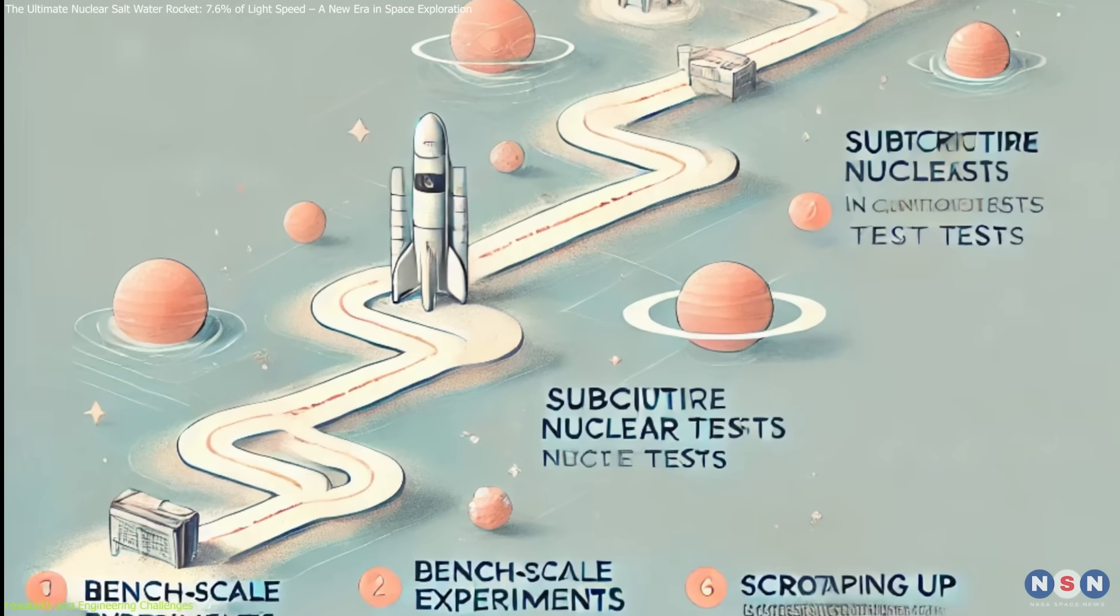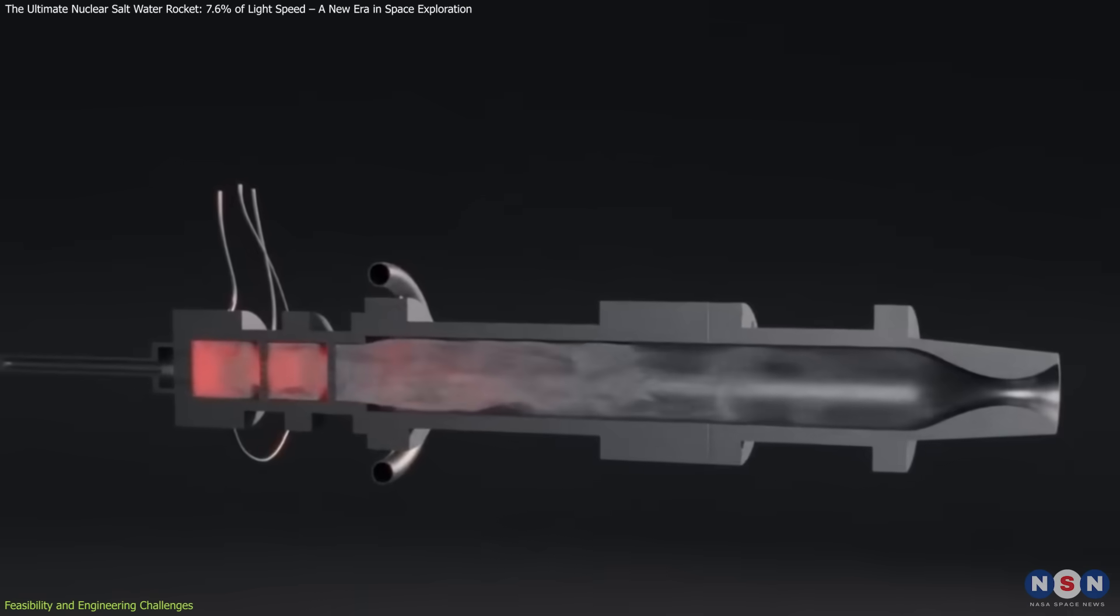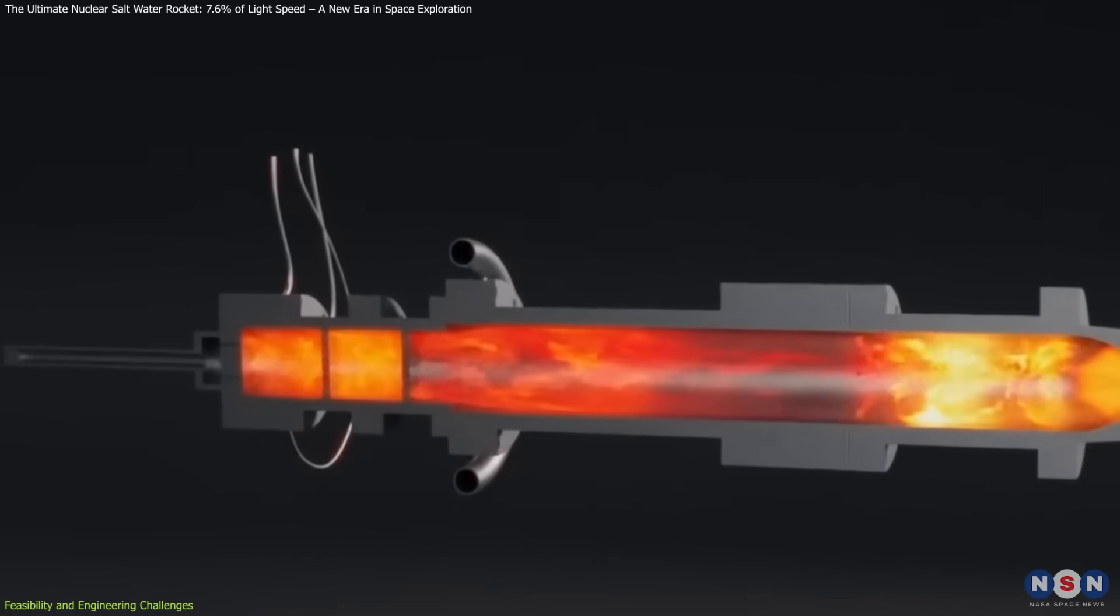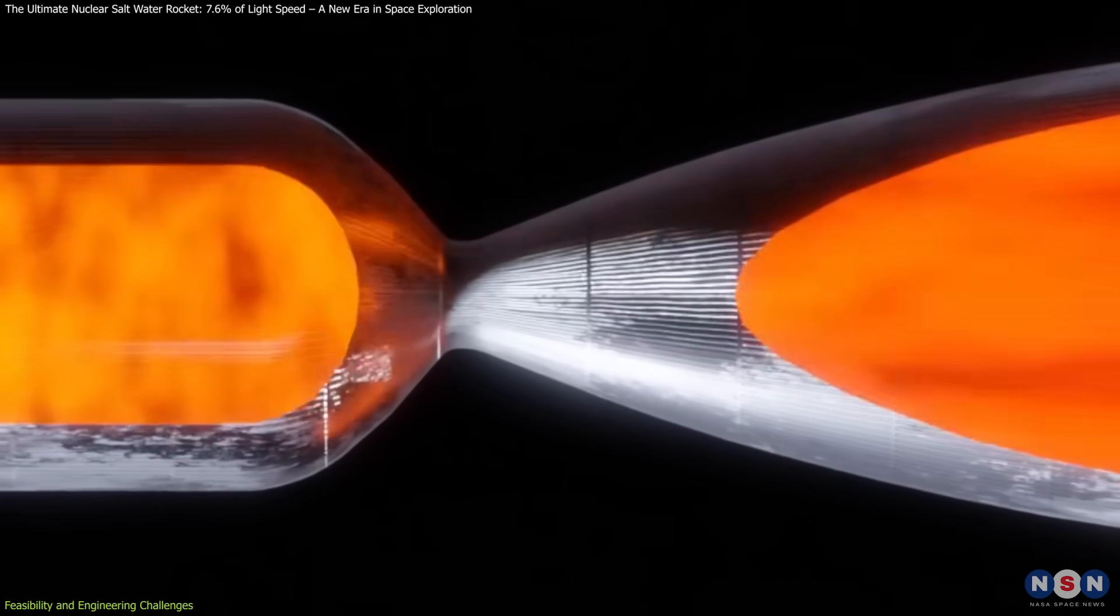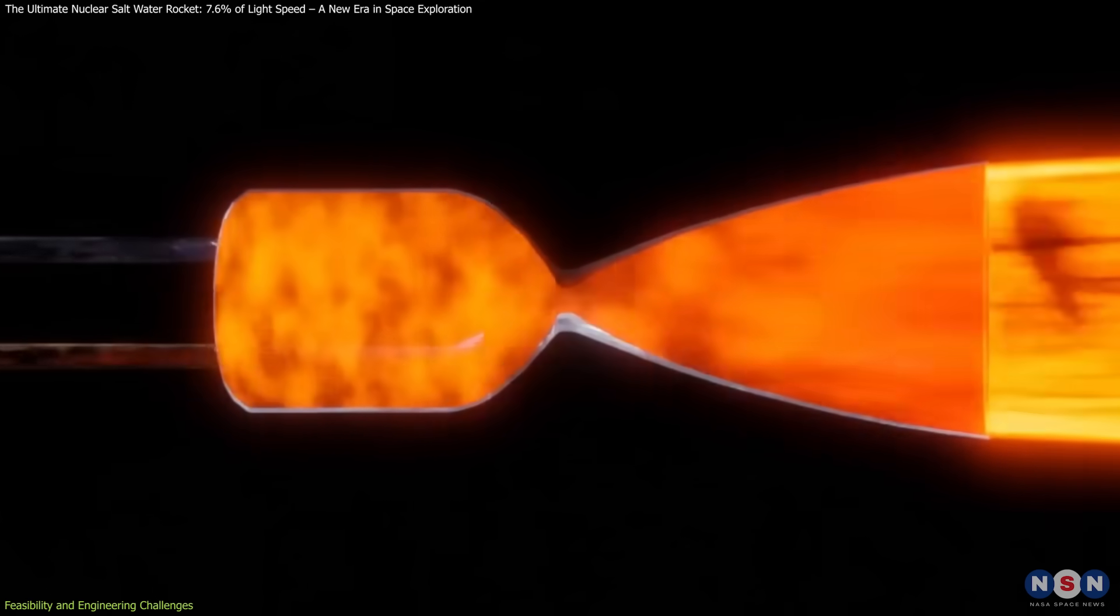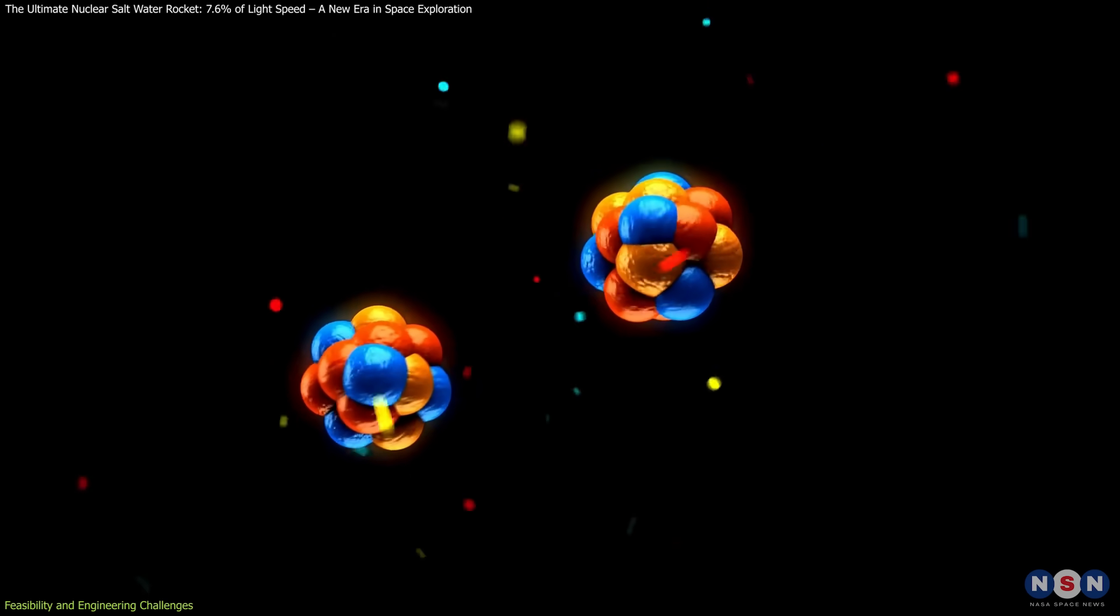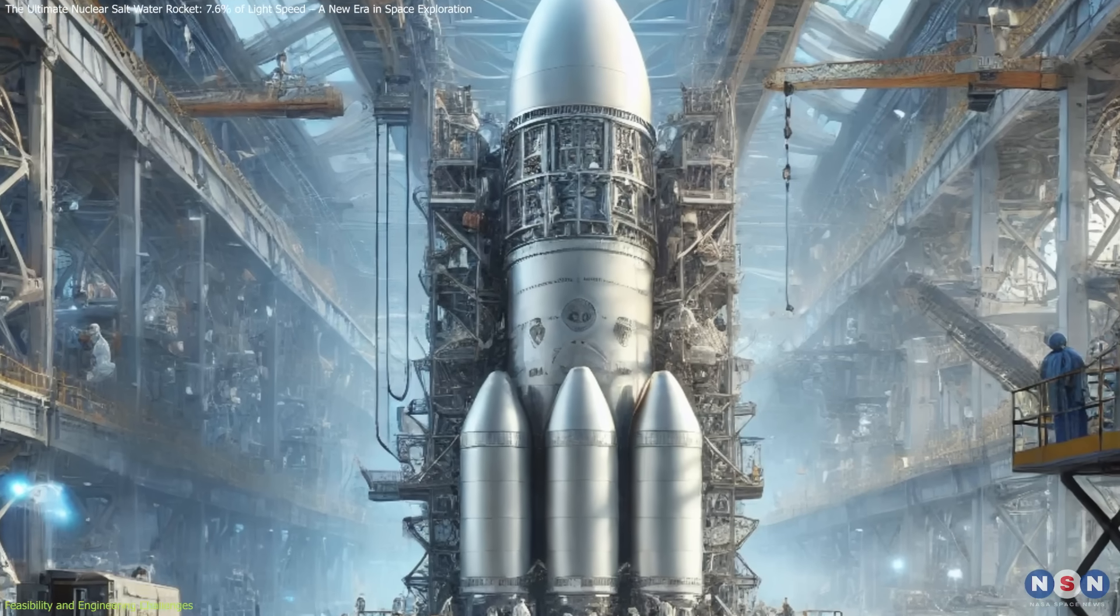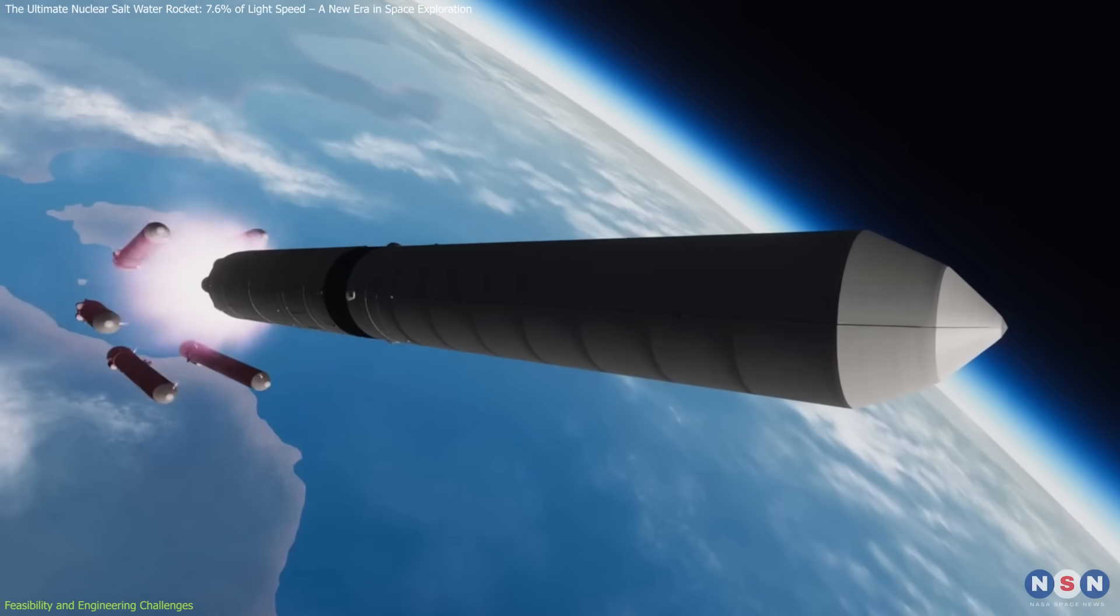To address these challenges, a development roadmap has been proposed, outlining a step-by-step approach. The first phase involves bench-scale experiments using non-radioactive substitutes to test storage and injection systems. This would be followed by sub-critical nuclear tests, where real uranium salts are used, but without triggering a full reaction. Once safety and material behavior are well understood, the project would move to controlled criticality tests with small-scale fission reactions. The final steps involve building an integrated system prototype, conducting space-based test flights, and eventually scaling up to full operational deployment.